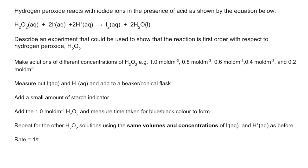The rate is 1 over the time, and then we'd plot a graph of 1 over time against concentration, so effectively we're making a rate concentration graph. And if it's first order with respect to the hydrogen peroxide, we should get a straight line graph through the origin, showing that the rate is directly proportional to the concentration.